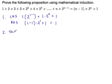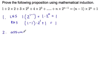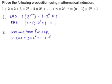And step number 2: assume true for n equals k. So we have 1 plus 2 times 2 plus 3 times 2 squared plus all these other terms, plus k times 2 to the k minus 1. And that we're assuming to be k minus 1 times 2 to the k plus 1 from our statement here.